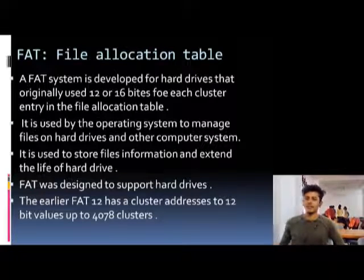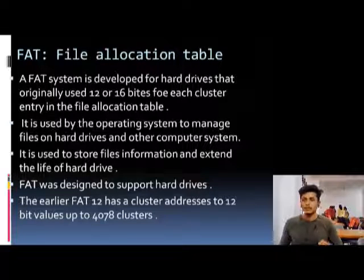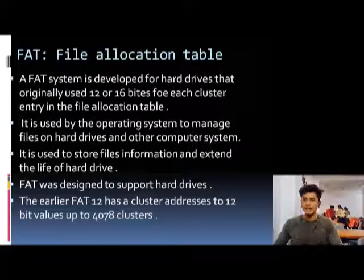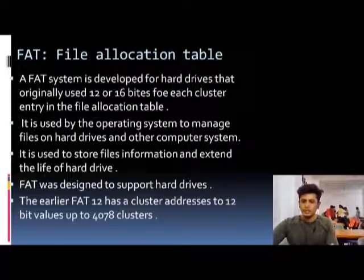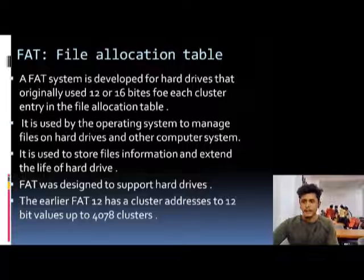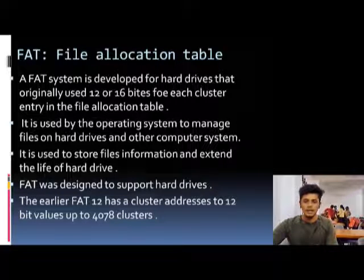Now we will see what is FAT. FAT is a full form of File Allocation Table. A FAT system is developed for hard disk that originally used 12 or 16 bytes for each cluster entry in the file allocation table. It is used by the operating system to manage files on hard drives and other computer systems.